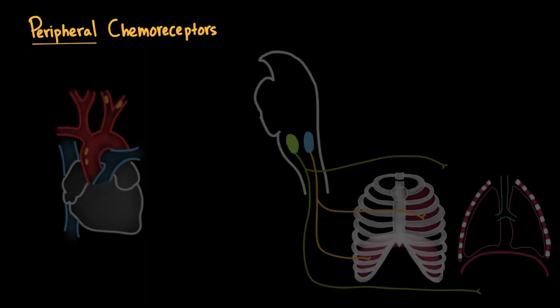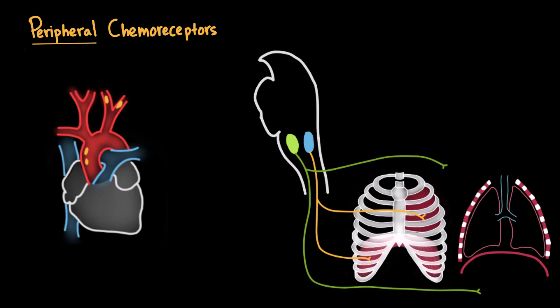Next, we have the peripheral chemoreceptors, meaning they exist outside of the brain. They are located in the carotid bodies at the bifurcation of the carotid arteries and the aortic bodies in the aortic arch. These receptors respond primarily to low oxygen levels, but also to high CO2 and low pH.